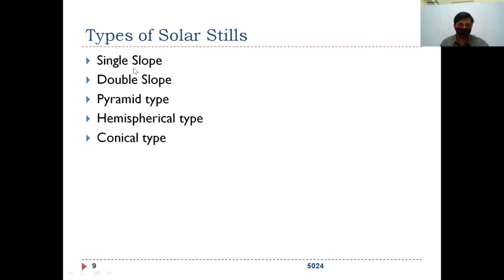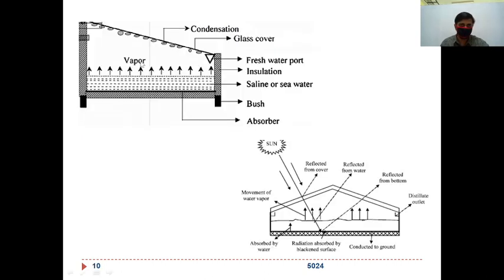These are the different types of solar stills: single slope, which we have seen, then there is a double slope and pyramid type. You can see this is a single slope, and when you add the other one on the opposite side, we will get a double slope solar still.